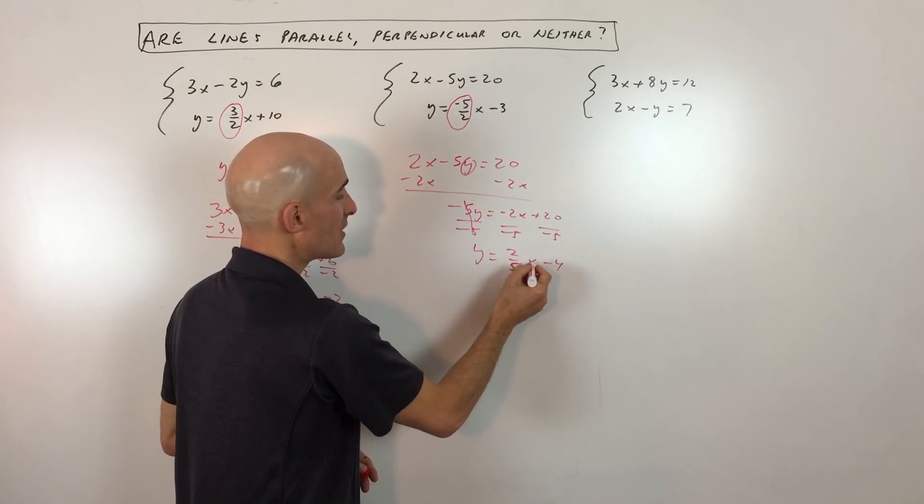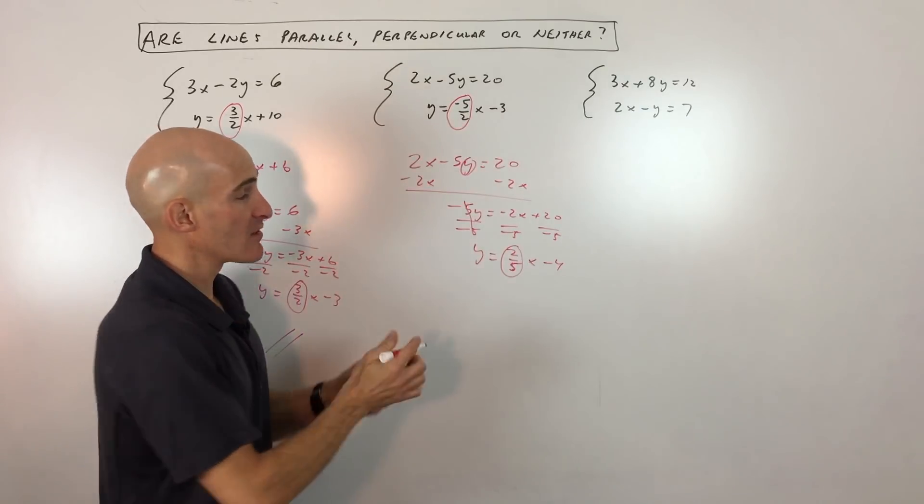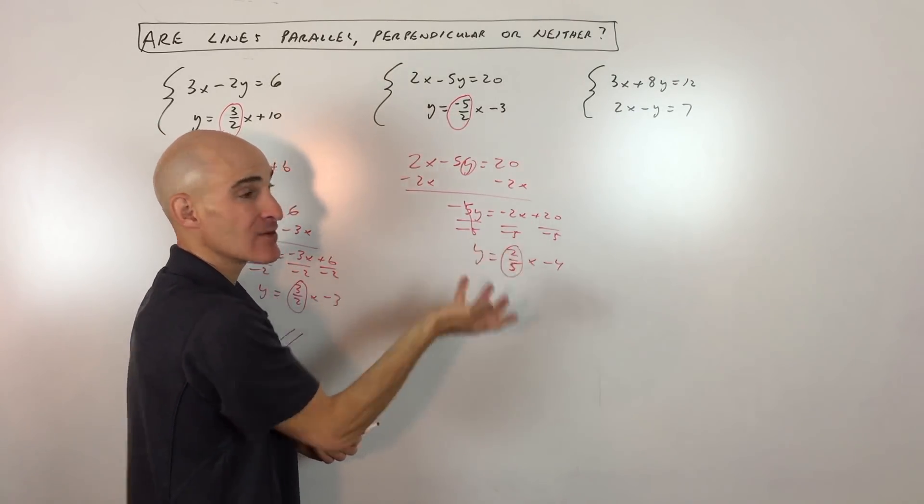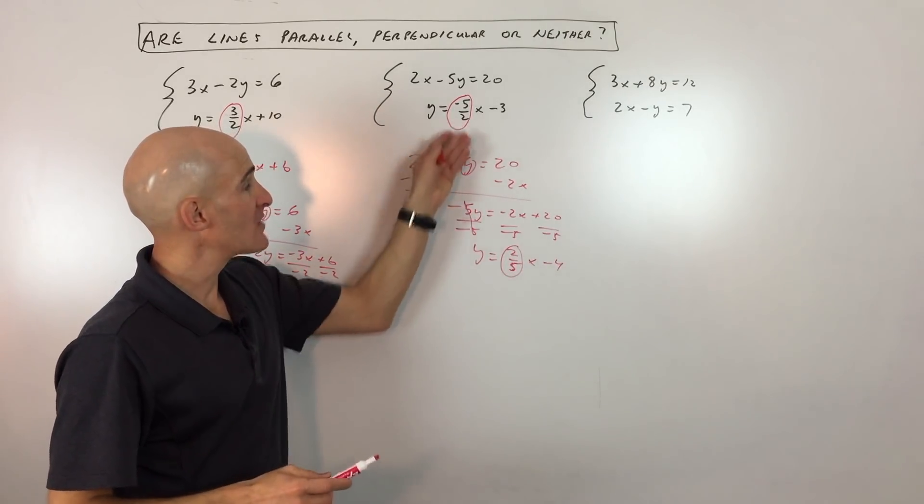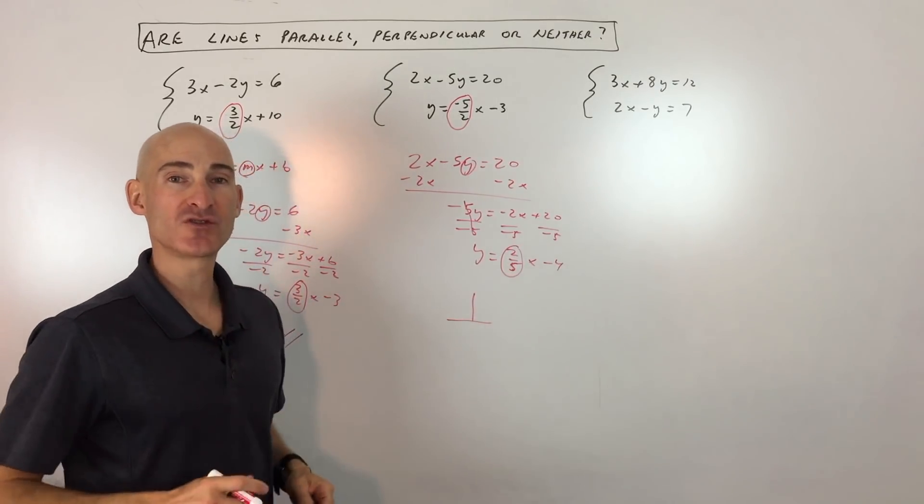Okay, now when we look at the number to the left or in front of the x, that's the slope. And notice these two slopes, they're opposite signs. This one's negative, this one's positive. And they're reciprocals of one another, meaning we flipped one of them over to get the other one. So that means that these two lines are perpendicular to one another. They form right angles, or 90 degrees.